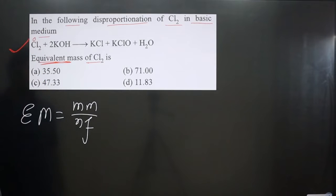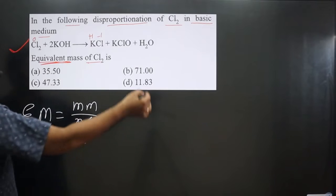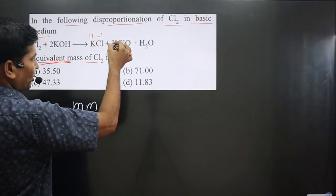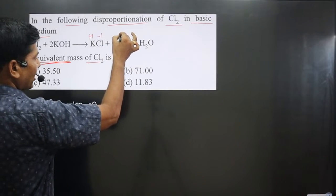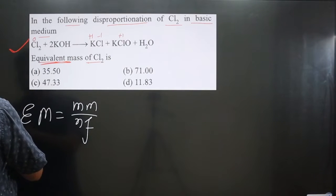Neutral molecule has a 0 oxidation number. Other side potassium is +1, then this is -1. Then oxygen is -2, potassium is +1, then Cl will be present in +1 oxidation number. So the equation we get, let me write it other side.